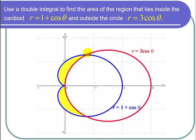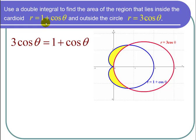We see that they intersect at two points, and we need to find those intersection points so we can find the limits of integration. We do that by setting the r's equal to each other, and we get that 3 cosine theta equals 1 plus cosine theta. We can subtract the cosine theta from both sides and then divide by 2 to get that cosine of theta is equal to a half. That occurs when theta is pi over 3, which is right here, and theta is 5 pi over 3, which is right here.